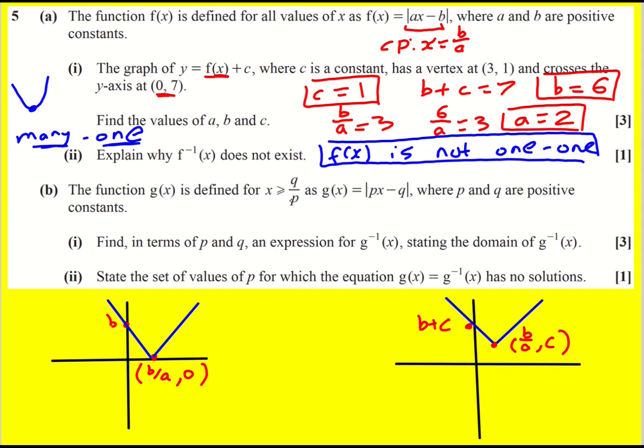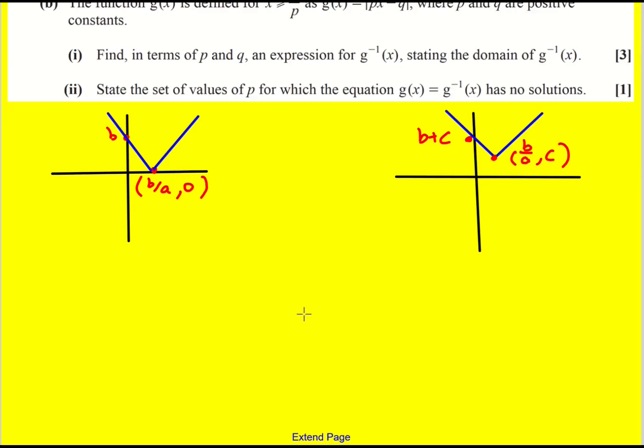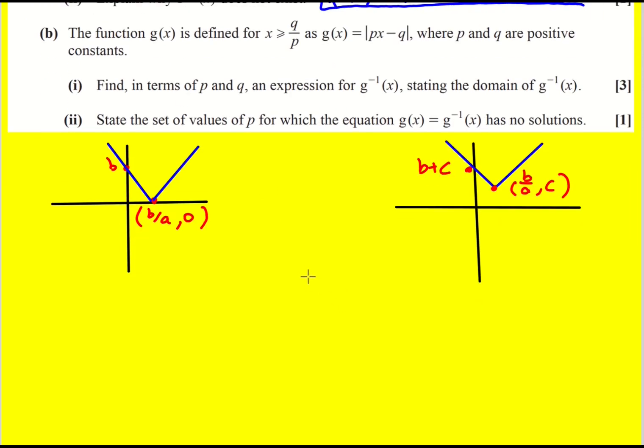g(x) is then defined as the same function but x is greater or equal to, well not quite the same function because we've got p and q instead but the same sort of thing, x is now greater or equal to q/p. So what that is going to mean is, let me draw over here. Now we've got a critical point at q/p but we're only going to have this part, so this is y equals g(x).